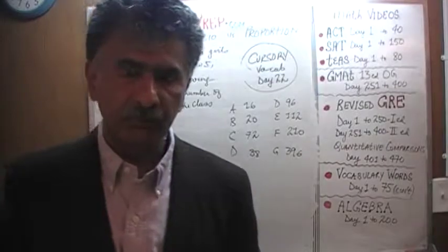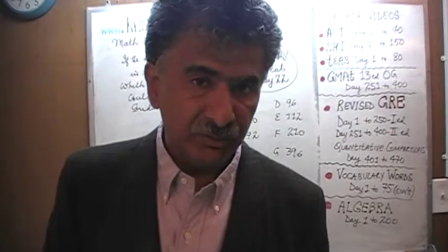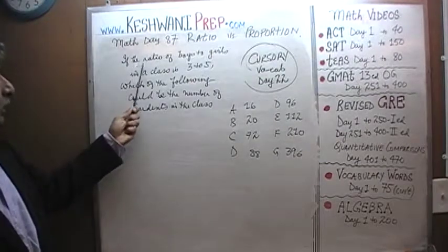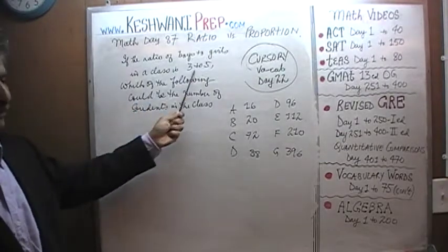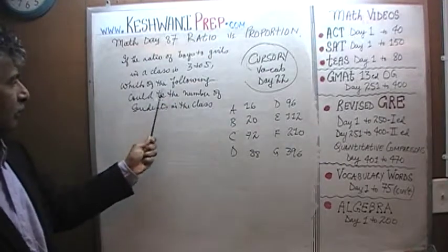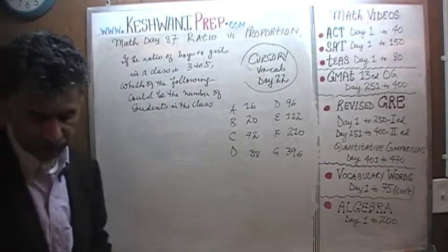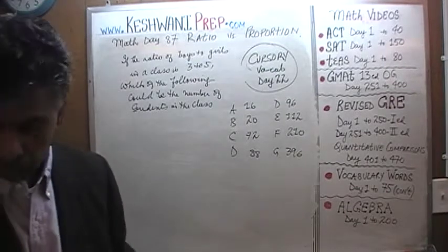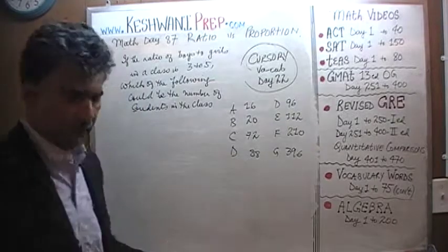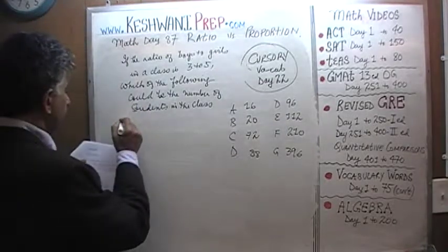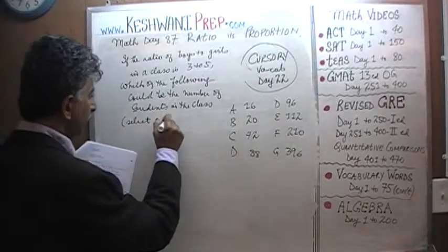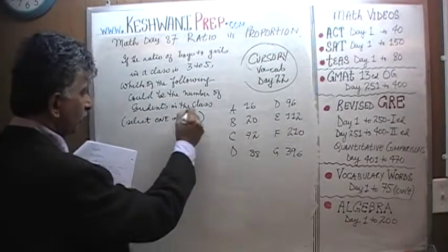The first problem on the blackboard deals with the concept of ratio. We are told that the ratio of boys to girls in the class is 3 to 5. The question is: which of the following could be the number of students in the class? They tell you to select one or more answer choices.